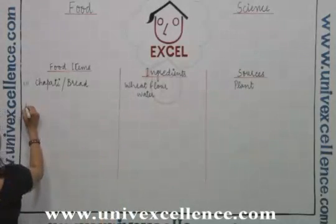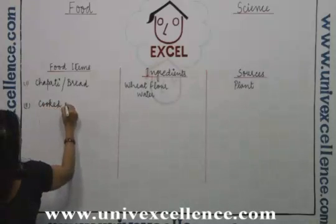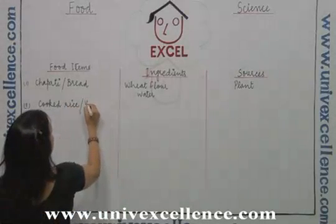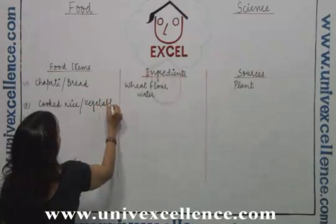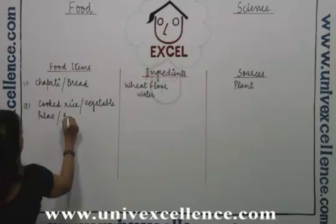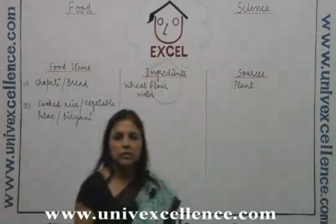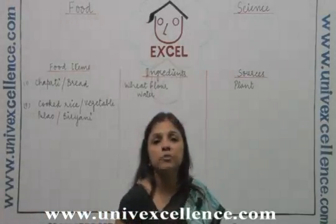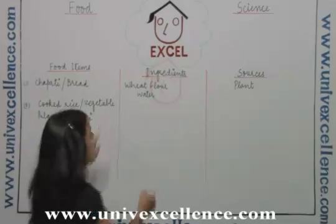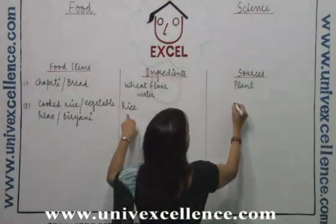The next food item is cooked rice, or sometimes we call it vegetable pulao, or biryani — we call it by different names in different languages. The ingredients required to prepare this food item are rice, and again we get rice from plants.